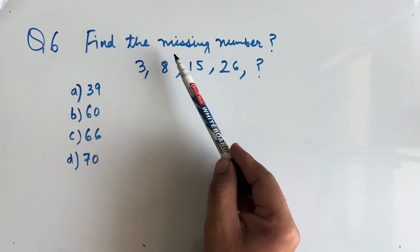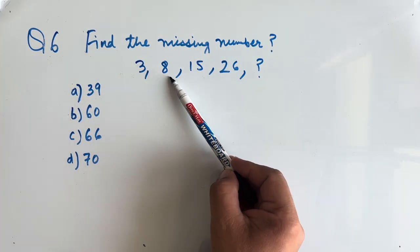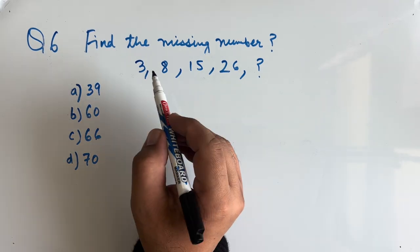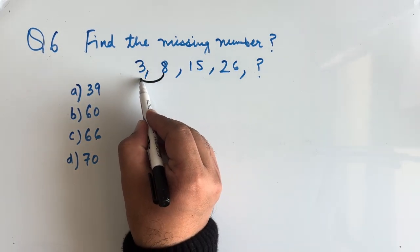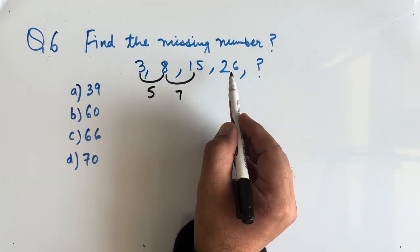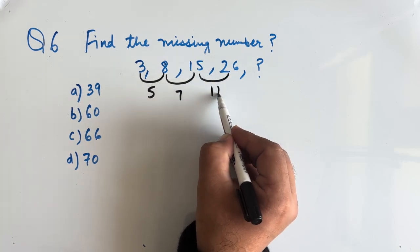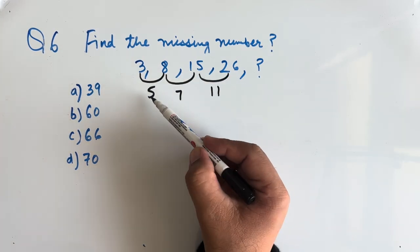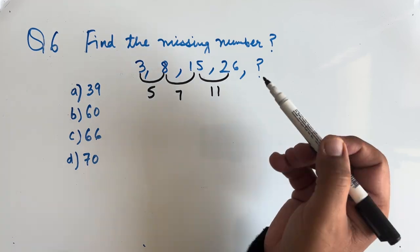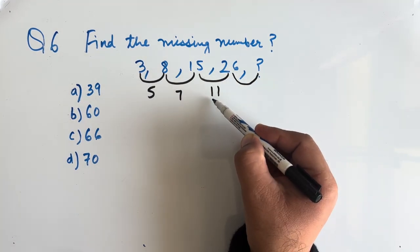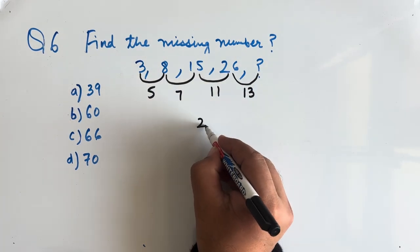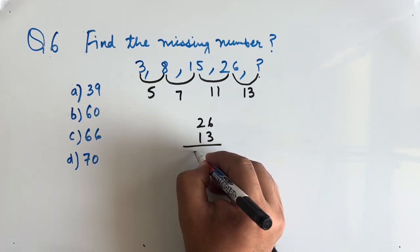Now question number 6: find the missing number — 3, 8, 15, 26, and we have to find this missing number. Let us find the difference between the terms: 8 minus 3 is 5, 15 minus 8 is 7, 26 minus 15 is 11. We notice that 5, 7, 11 are prime numbers. The next prime number after 11 is 13, so the missing number will be 26 plus 13, that is 39. So option A is the correct answer.